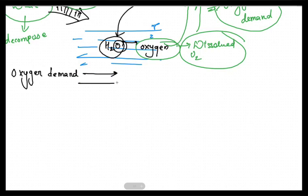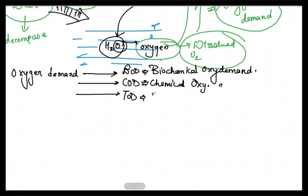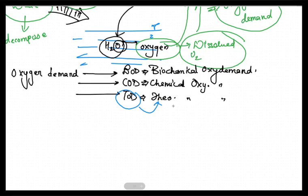This oxygen demand is of three types. First is BOD — biochemical oxygen demand. Next is COD — chemical oxygen demand. Next is TOD — theoretical oxygen demand. We have to calculate this theoretically; we need to understand how much oxygen is required to decompose the waste.